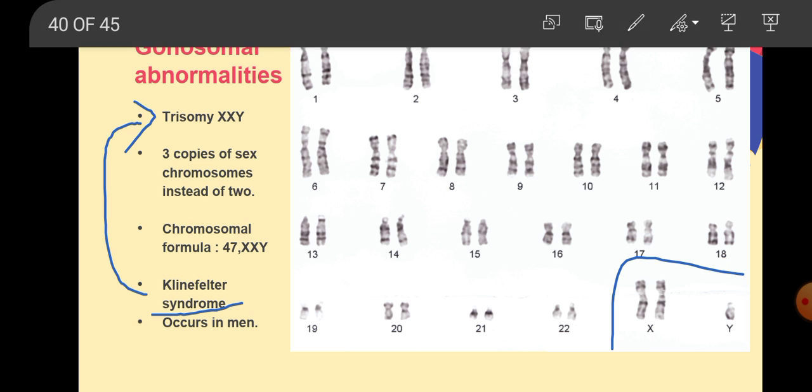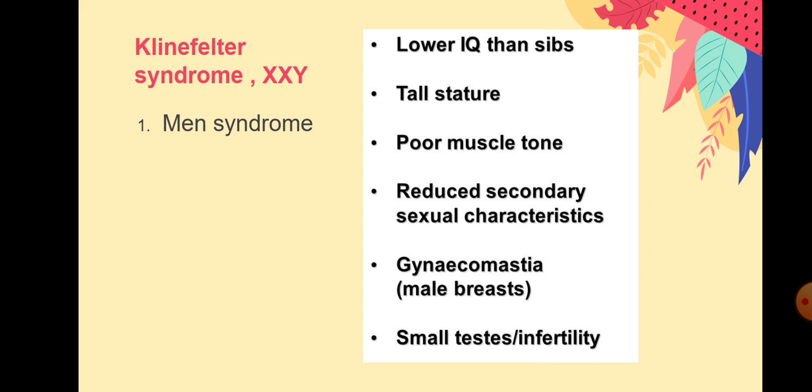It occurs in men. Let us see some symptoms of individuals who have Klinefelter syndrome. So Klinefelter syndrome XXY occurs only in men. They have lower IQ than siblings, so they have learning disabilities. They take long time to understand. They are tall stature, taller than others. They have poor muscle, and the most important thing is that they are not able to produce sperm. So also they are not able to have babies. Infertility. They are sterile, which means that they cannot have babies, have no sperm, so they cannot reproduce. So this is trisomy XXY.